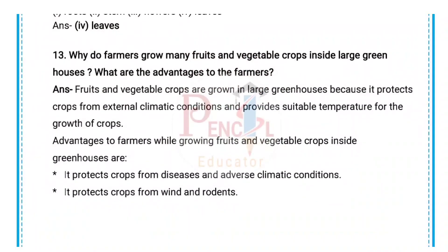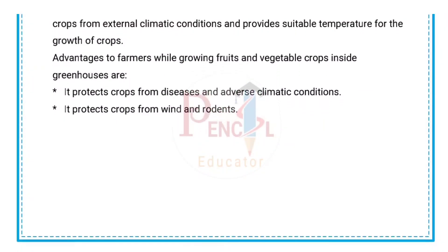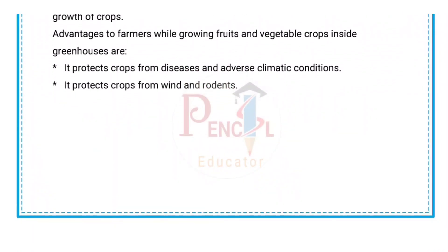Thirteenth question: Why do farmers grow many fruits and vegetable crops inside large greenhouses? What are the advantages to the farmers? Answer: Fruits and vegetable crops are grown in large greenhouses because it protects crops from external climatic conditions and provides a suitable temperature for growth. Advantages include protection from diseases, adverse climatic conditions, wind, and rodents.